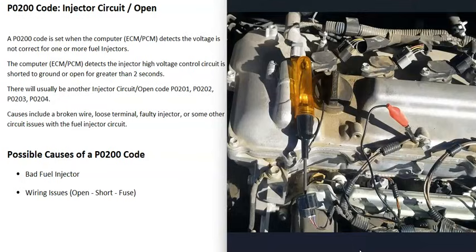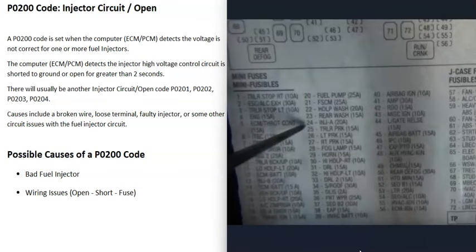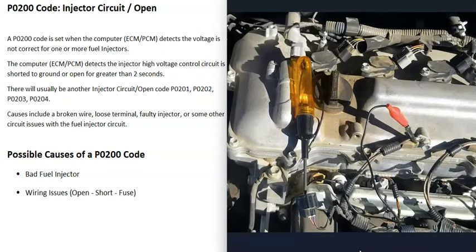The next thing that could cause this is a wiring issue — any kind of open, short, or blown fuse can cause problems. If you're getting a lot of injector circuit codes, especially if all cylinders are showing fuel injector circuit codes, it's a good idea to check for any fuel injector fuses that may have gone bad. A blown fuse will cause problems and typically triggers a lot of other fuel injector circuit codes.